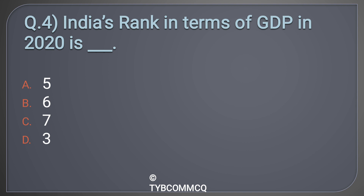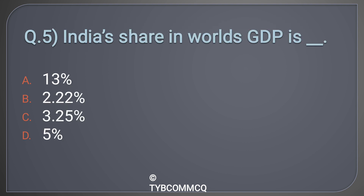Question number four: India's rank in terms of GDP in 2020 is ___. Option A: Five, Option B: Six, Option C: Seven, Option D: Three. The correct answer is Option B: Six.